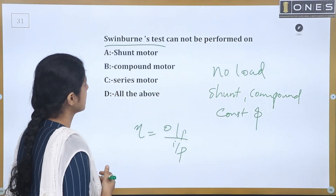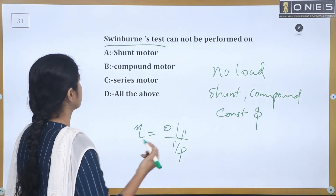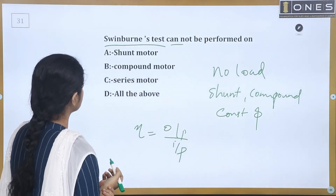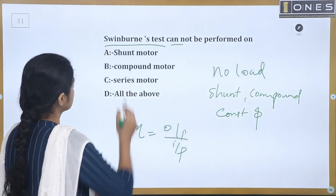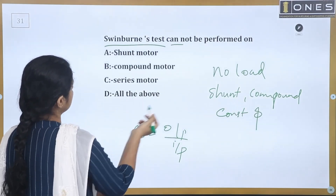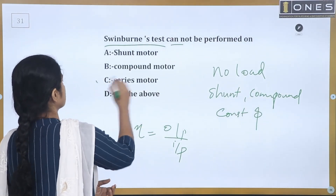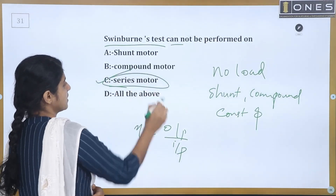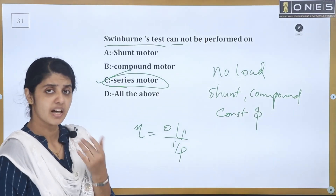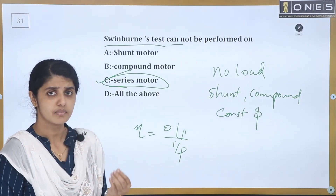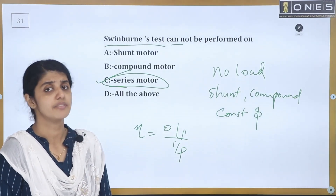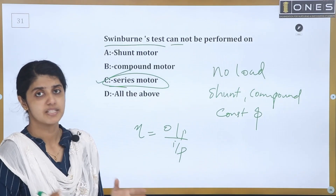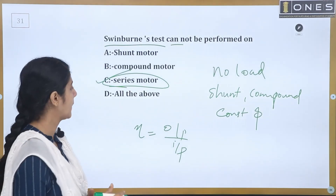Swinburne's test cannot be performed on a series motor. Among shunt motor, compound motor, and series motor, Swinburne's test cannot be performed on the series motor because the flux is varying — it is not a constant flux machine.